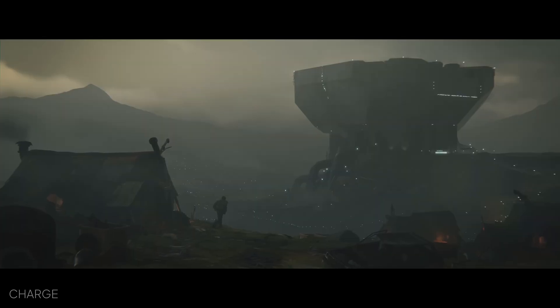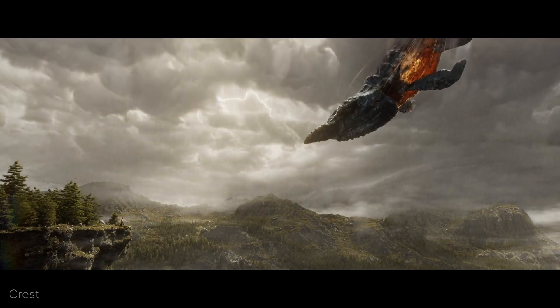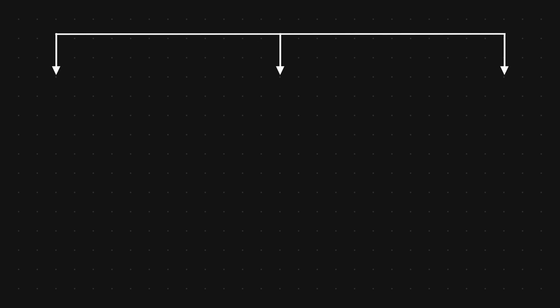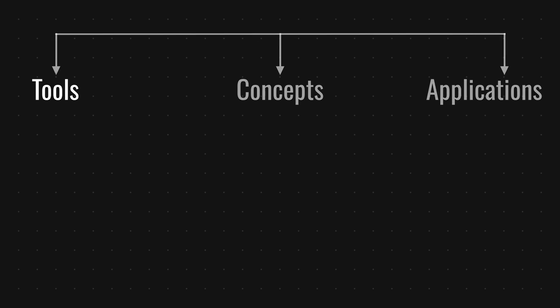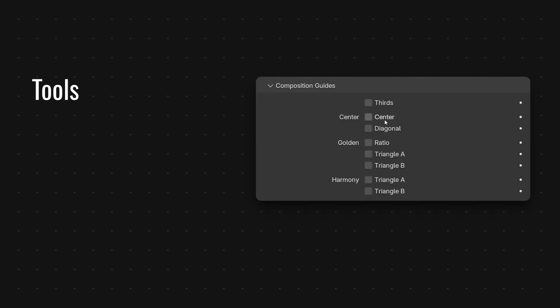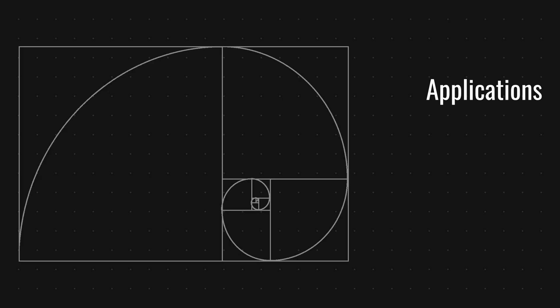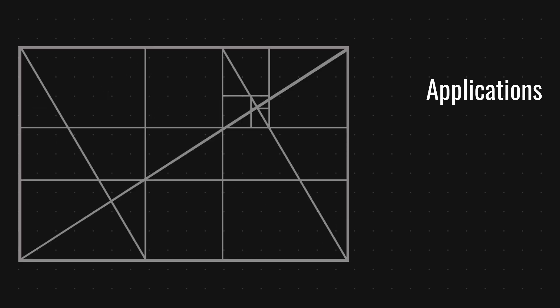Here's everything you need to know about composition in Blender under 6 minutes. To learn effectively, I like to break things down into 3 categories: Tools, Concepts, and Applications. Tools are the camera settings and guides you can use directly in Blender. Concepts are the principles and techniques of visually appealing compositions. Applications are practical techniques and guides you can use to combine tools and concepts effectively.